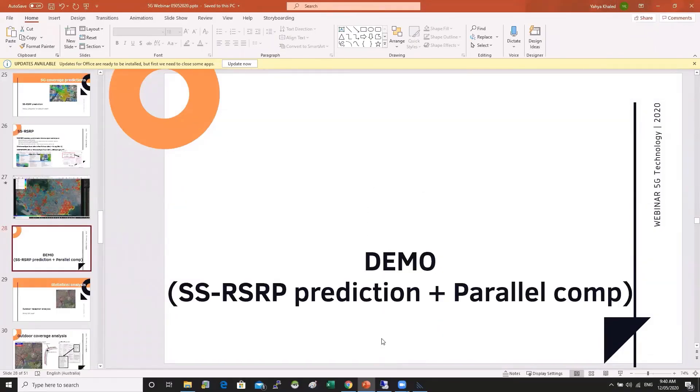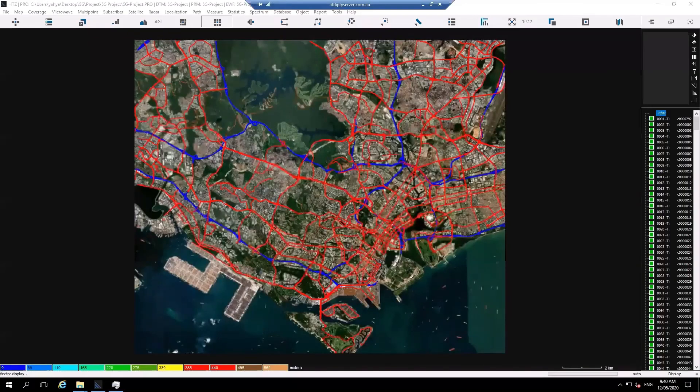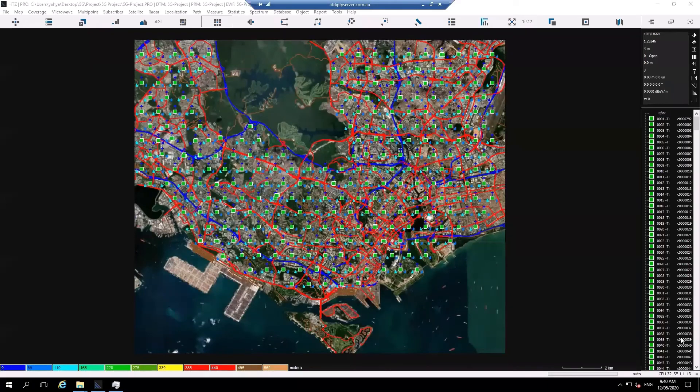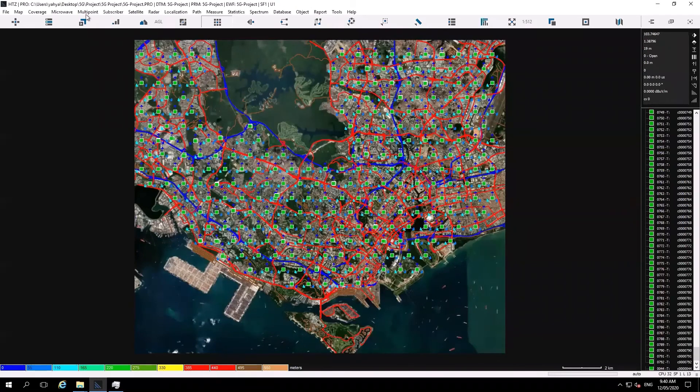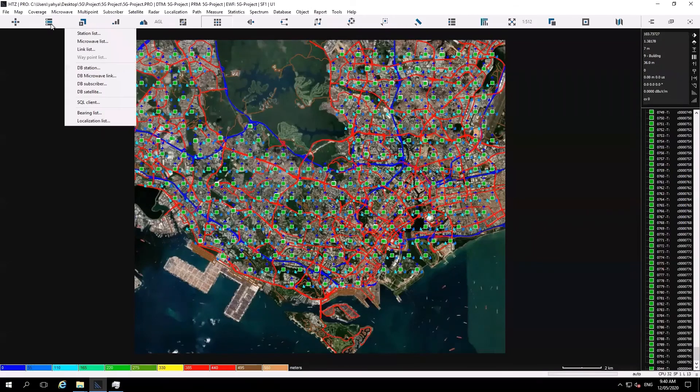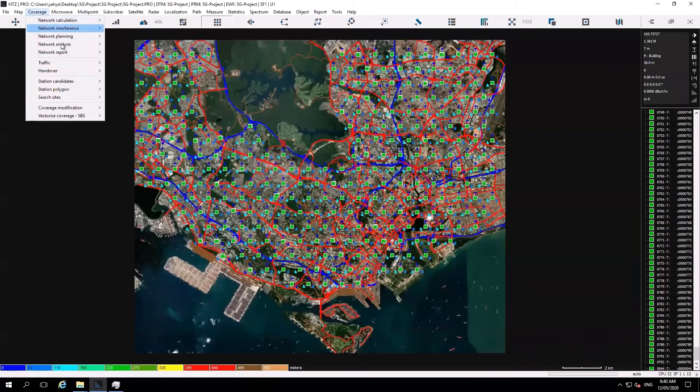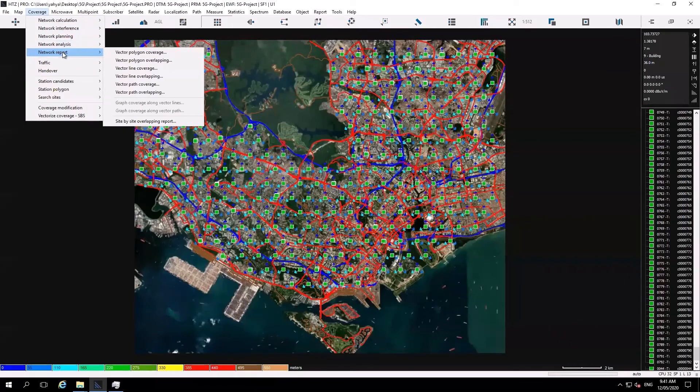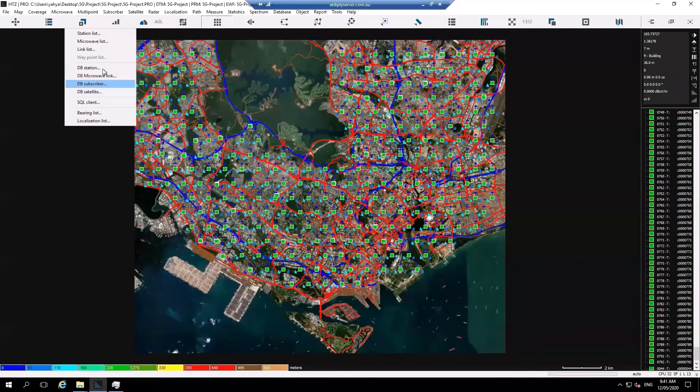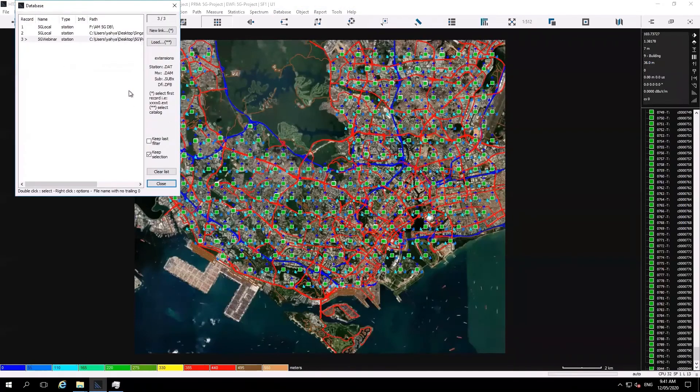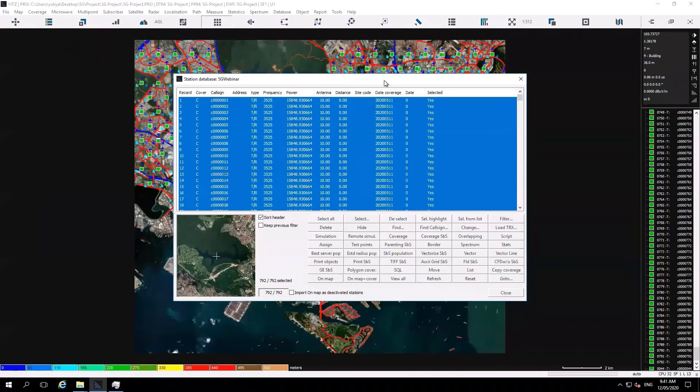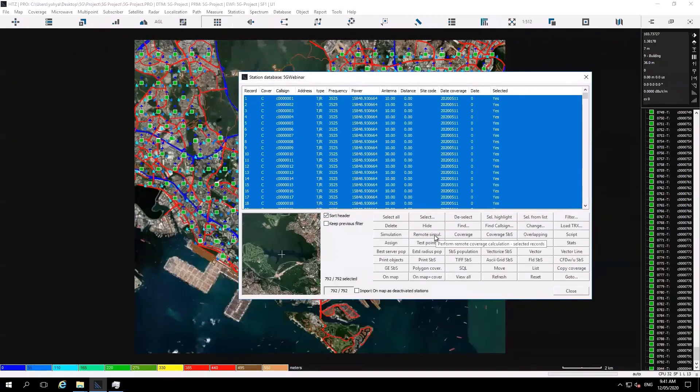So here, I'll take this opportunity to show you quickly how do we run coverage predictions in the software in a very efficient way. This computer now, I've got how many sites? I've got nearly 792 sites. I've got a lot of sites. Now, let me show you how coverage predictions take care in the latest release of software, how fast it is. So if you have like 1,000, 2,000 sites, you can really speed up the process considerably. So you just go to the database station, the database station, you select the station database you have for your 5G network, and then you run remote simulation.